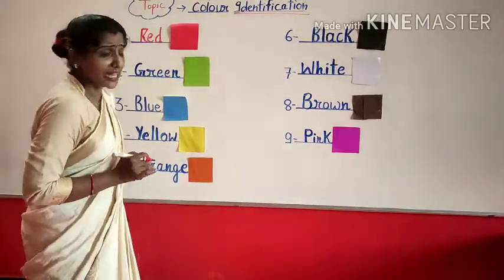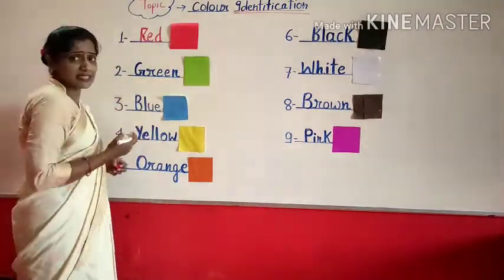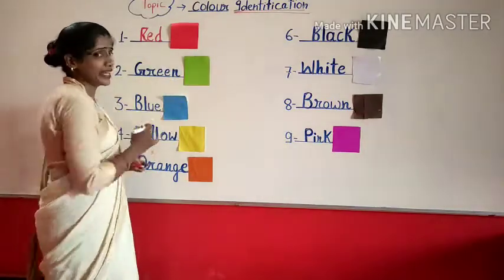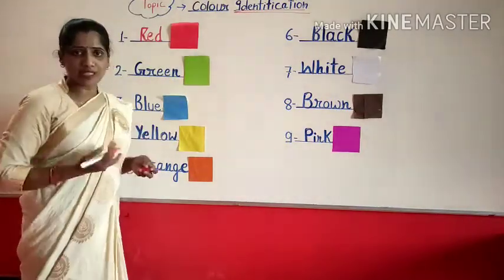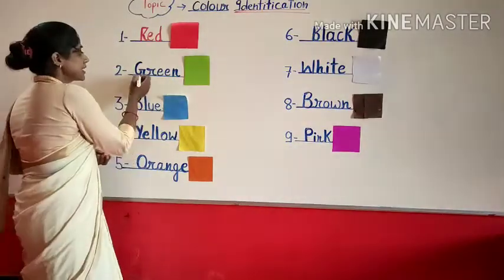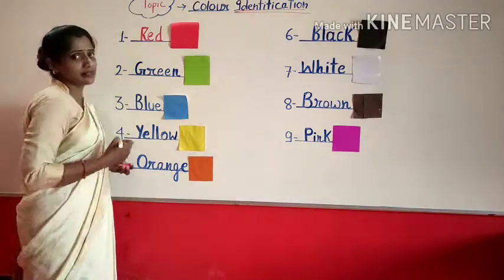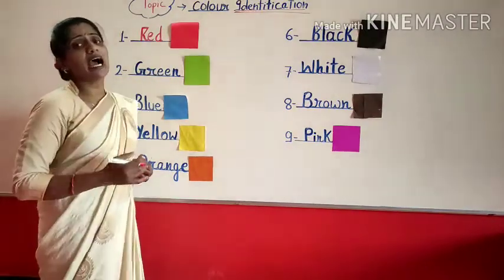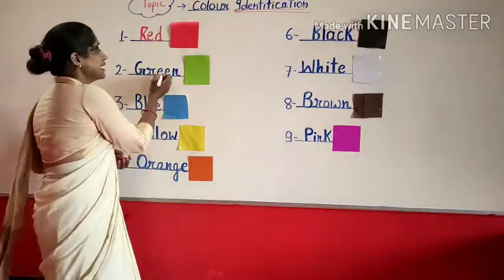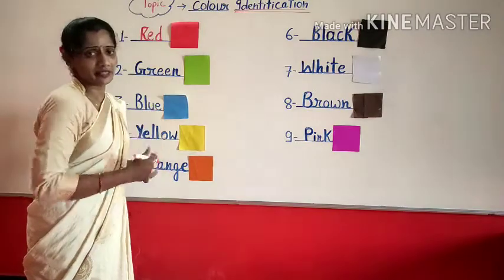Come to the next color. Which color is this? This is green. And what is the spelling of green? G-R-E-E-N. G-R-E-E-N. Green.